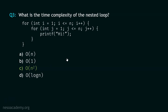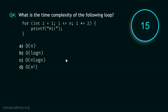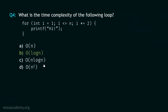Now let's move to question number 4, and your time starts now. Stop. The correct option is option B — Big O of log N. See the update expression. According to this update expression, the loop will work, and the time complexity of this loop is Big O of log N.